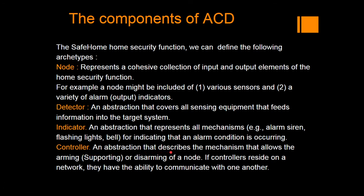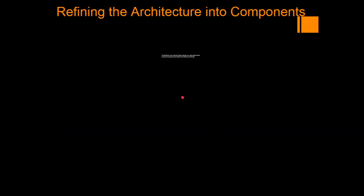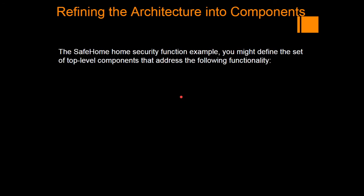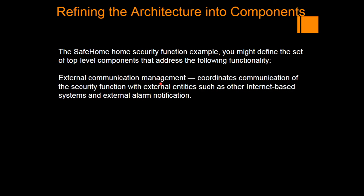A controller is an abstraction that describes the mechanism that allows the arming or disarming of a node. If a controller resides on a network, they have the ability to communicate with one another. They control the functionality of the system — that is called a controller. Now let us refine the architecture into components. Once you define the architecture using archetypes and patterns, we can expand those into components. A component is a module with a well-defined function of its own.